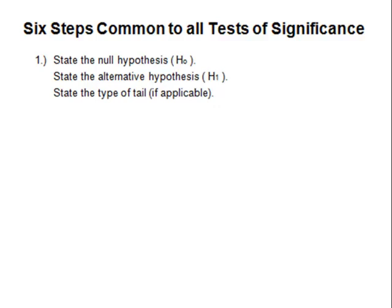State the type of tail — that will be a left tail, a right tail, or a two tail. Number two: state the predetermined significance level, alpha. Alpha normally is .10, .05, or .01.